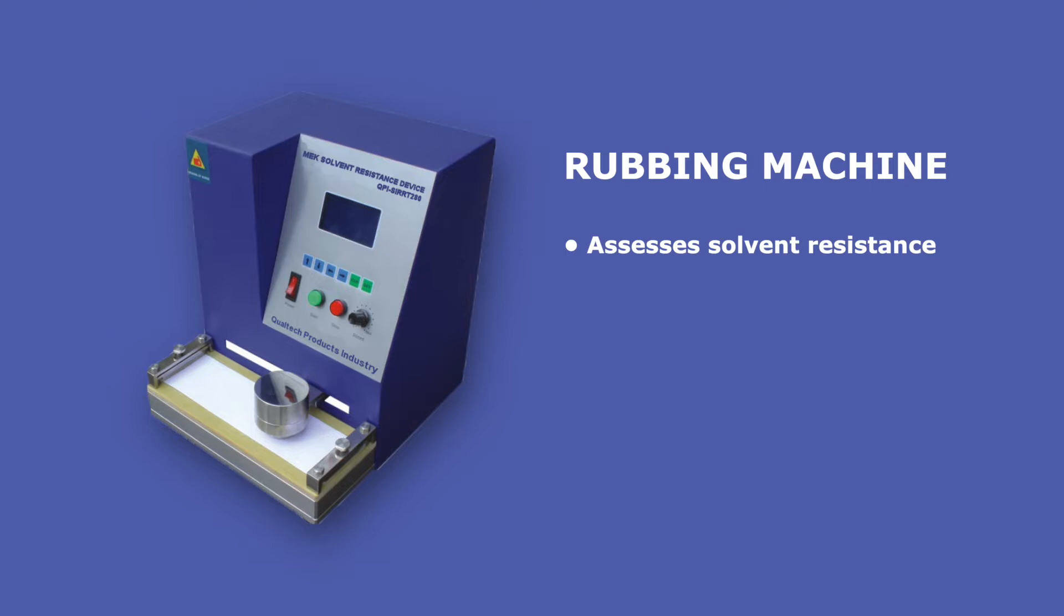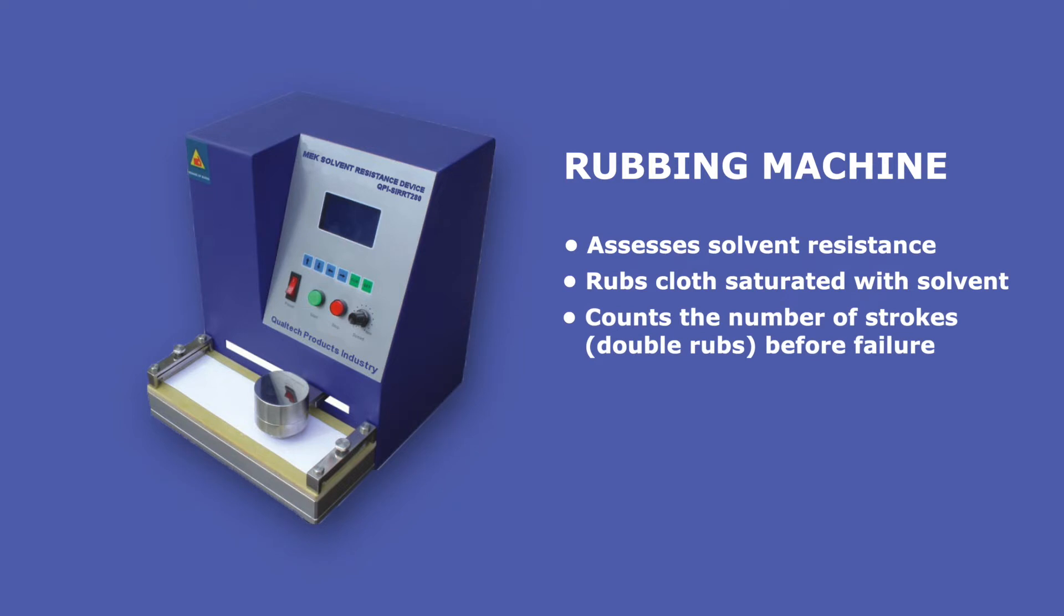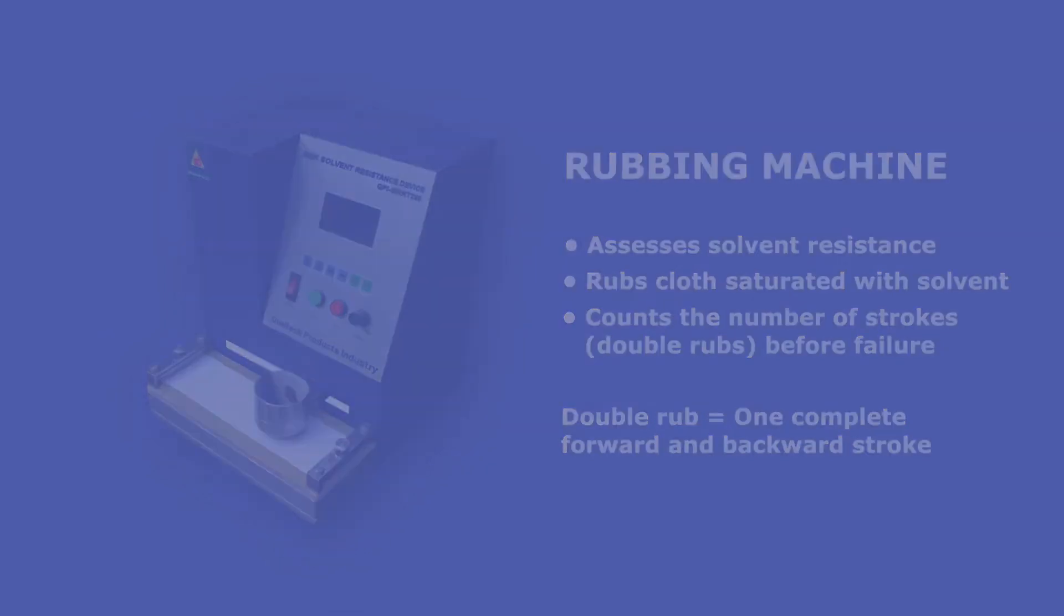This automated machine is used to test the solvent resistance of a coating by rubbing a cloth saturated with solvent across the coating and counting the number of strokes or double rubs before the coating ruptures or fails. A double rub is defined as one complete forward and backward stroke over a coated surface under specific conditions.